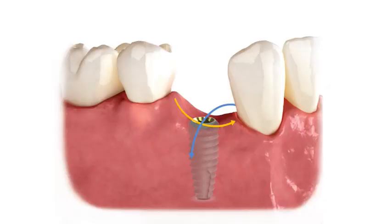Even if the patient lost multiple teeth and the mesial-distal curve disappears, you still have the facial-lingual curve. The bone isn't level.